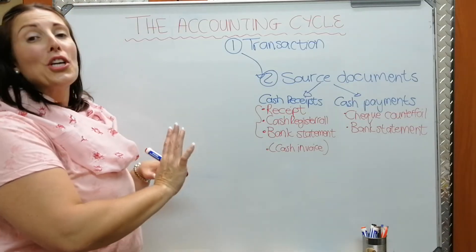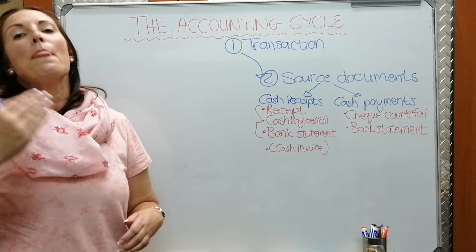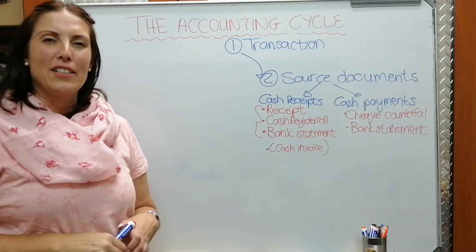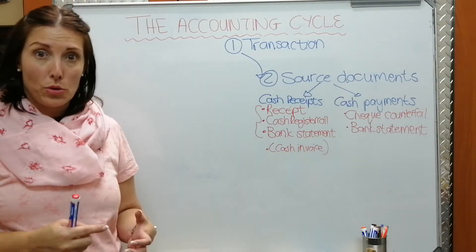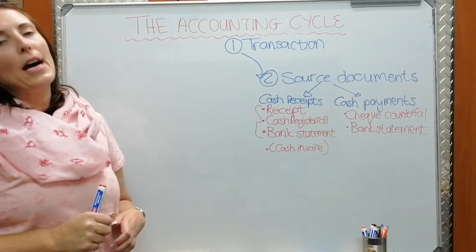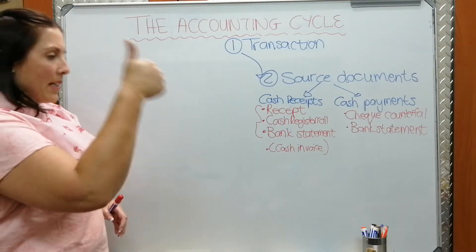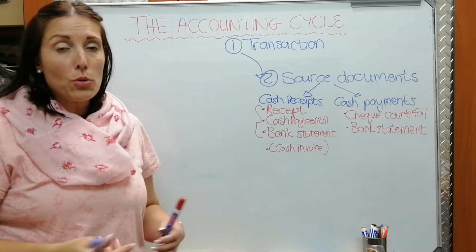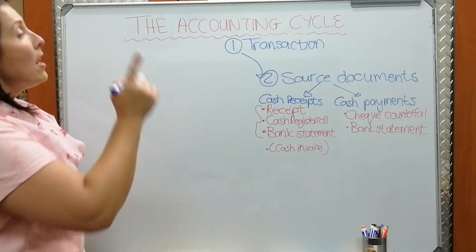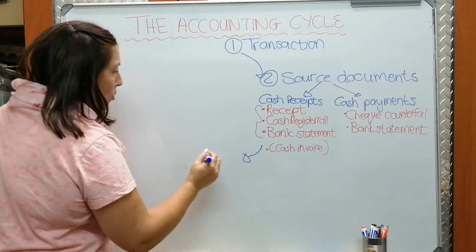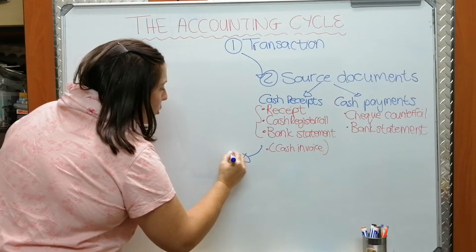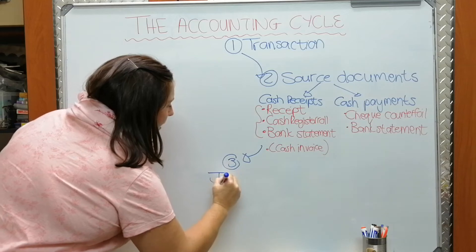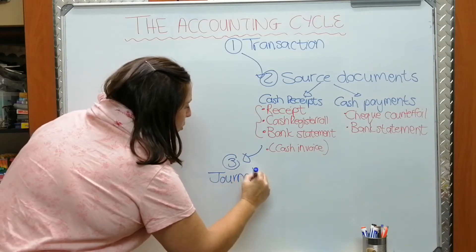Please remember those aren't the only source documents we'll ever deal with, but for Grade 8 accounting that is our focus. As you progress to Grade 9 and beyond, you'll encounter more source documents. Once the transaction takes place and is recorded on the applicable source document, the next step is to record these transactions — either cash receipts or cash payments — in a journal, also called a book of first entry.